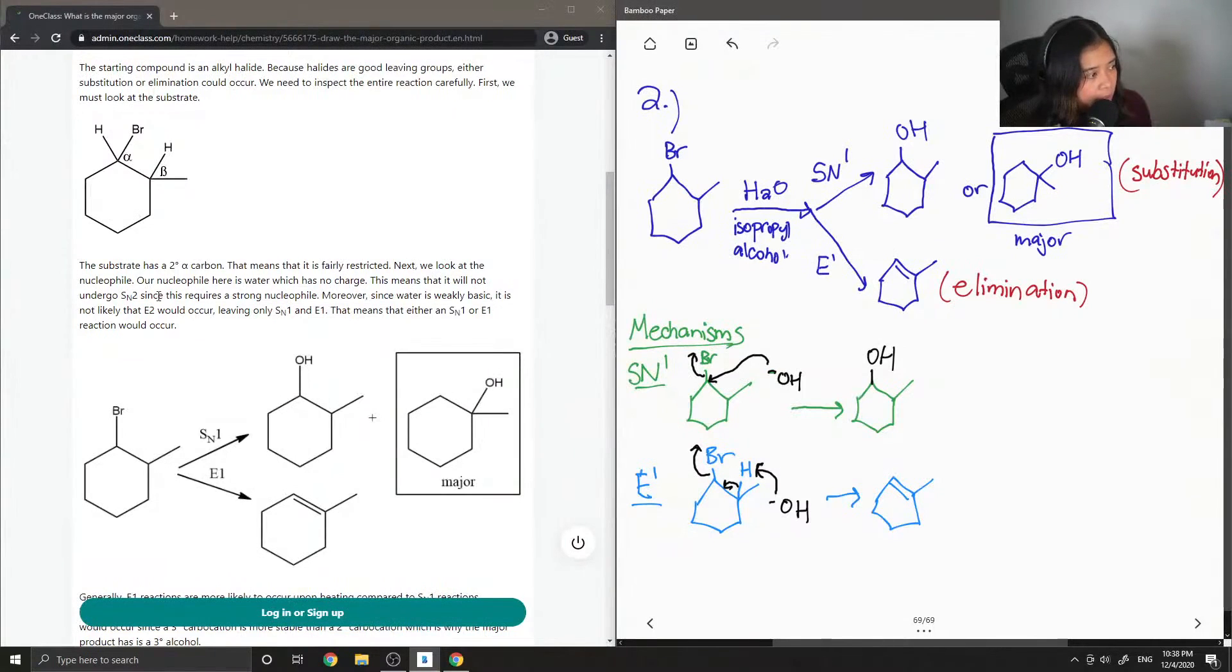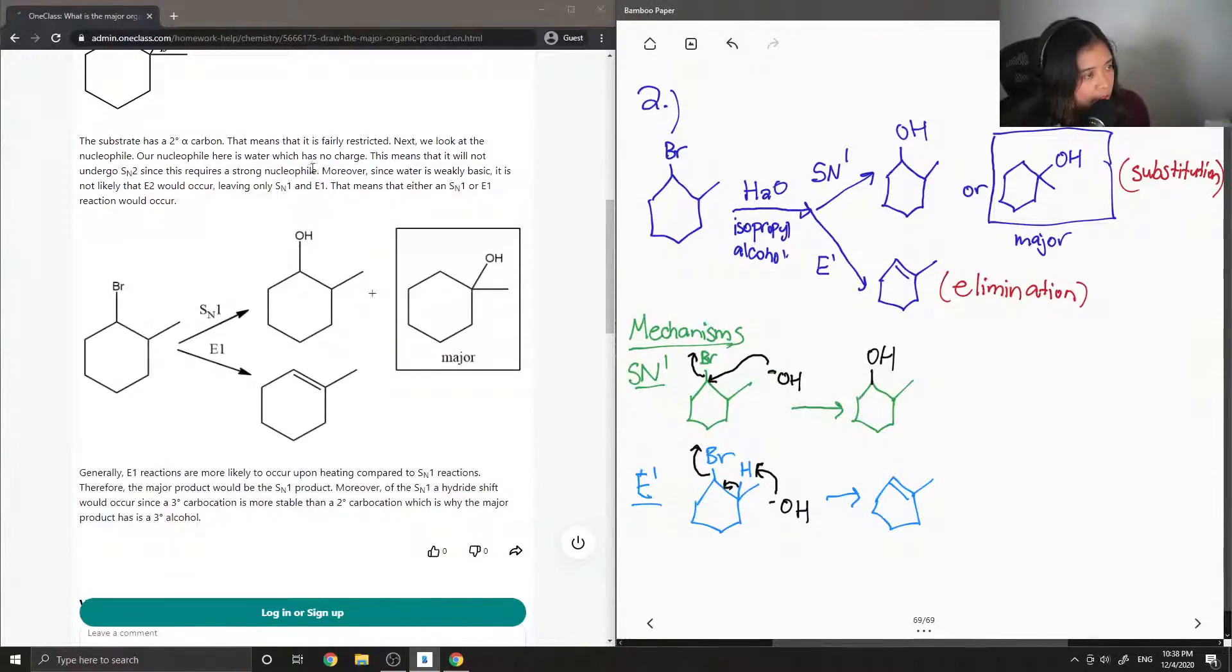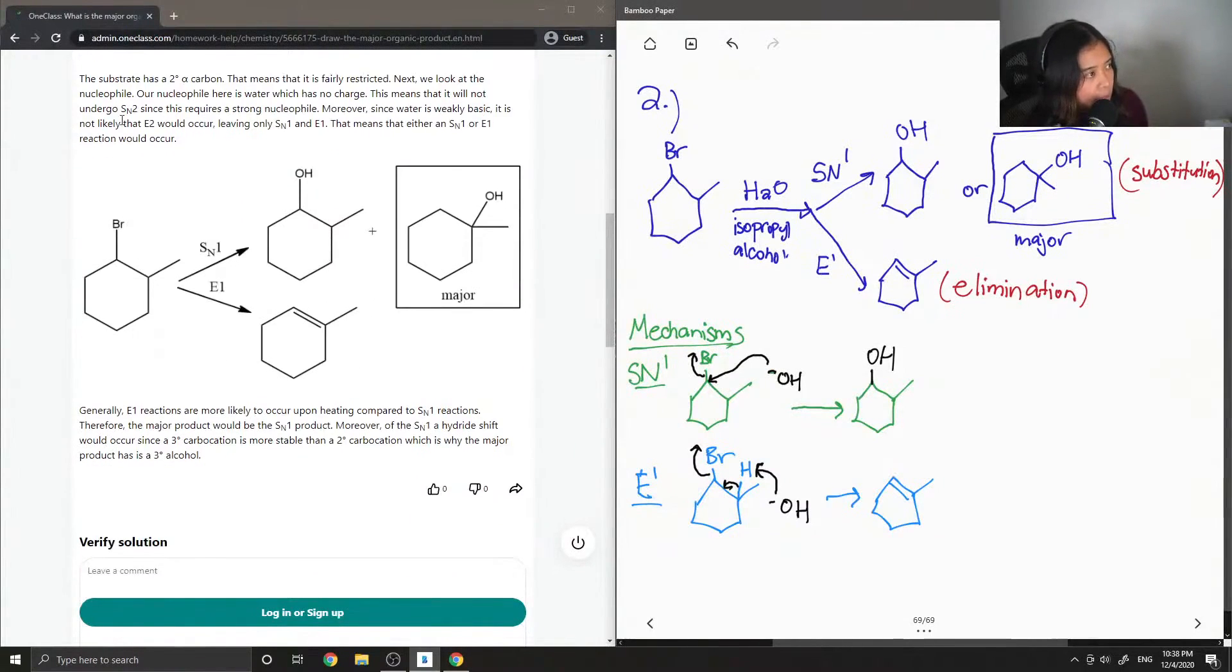Next, we looked at the nucleophile. Our nucleophile here is water which has no charge. This means that it will not undergo SN2 since this requires a strong nucleophile. Moreover, since water is weakly basic, it is not likely that E2 would occur, leaving only SN1 and E1.